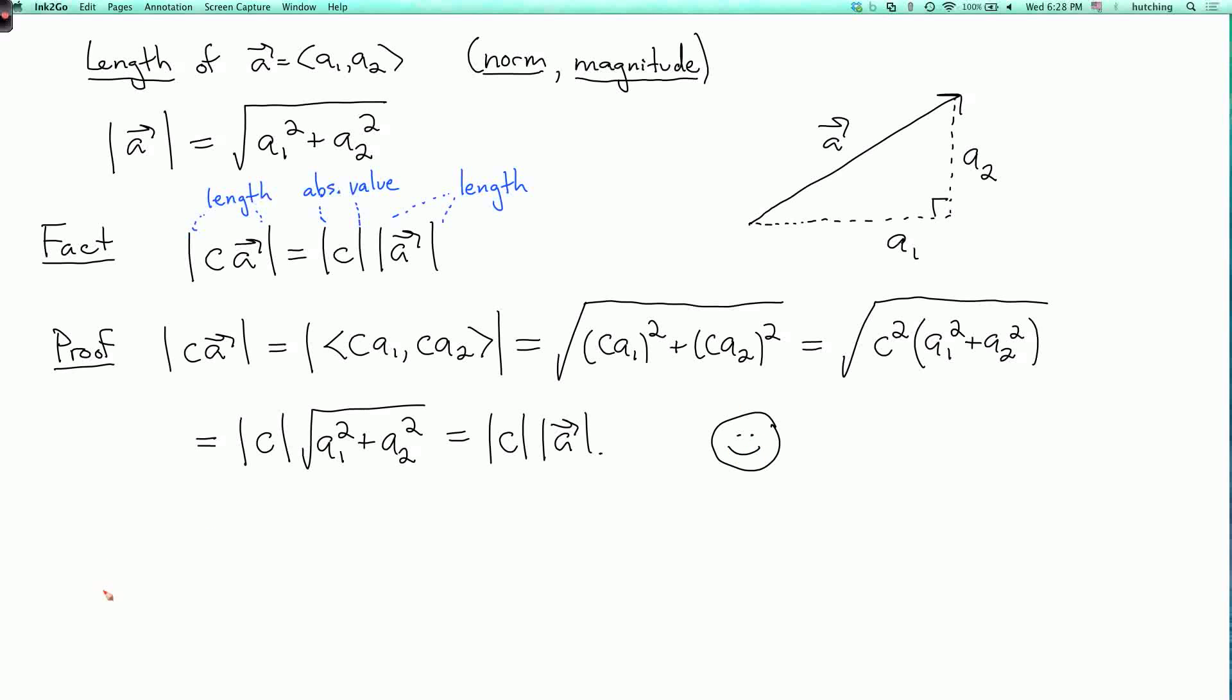A little warning is that length is not so well behaved with addition. So usually the length of A plus B is not the same thing as the length of A plus the length of B. However, there is a useful fact, which is the triangle inequality, which says that the length of A plus B is always less than or equal to the length of A plus the length of B. We'll be able to prove this a little later after we talk about the dot product.